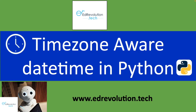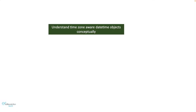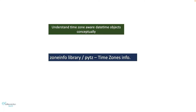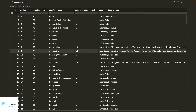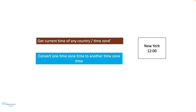Hi everyone. In this video we will learn about timezone-aware datetime objects in Python. We will learn how to understand them conceptually, how to use the zoneinfo and pytz libraries to get world timezone information, and how to get the current time of any specific country or timezone. We will also learn how to convert one timezone's time to another timezone's time.